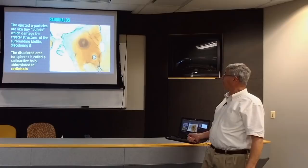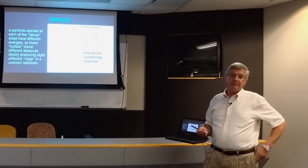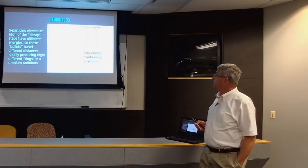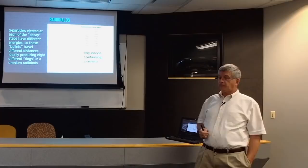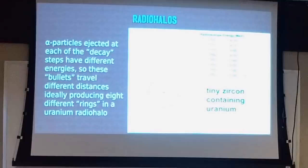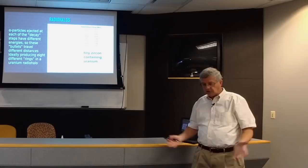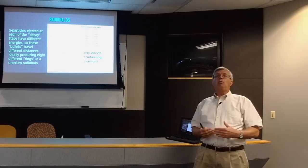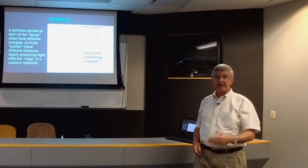At each decay step, the alpha particles are ejected at different energies. You can see in this diagram the different energies for the different steps from uranium-238, 234, 234m, and so on down to lead. The different energies mean the bullets travel different distances - like the difference between a handgun and a high-powered rifle. Consequently, those alpha particles go different distances into the surrounding biotite crystal, and the most damage is done where the bullets stop. You end up producing rings at different distances from the central zircon crystal.